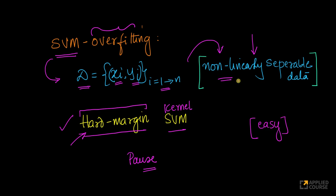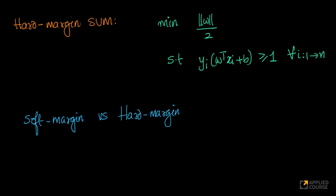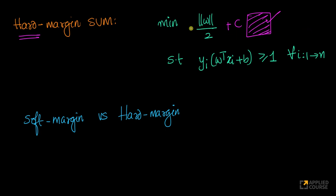The first hint is: because the data is non-linearly separable and you want to overfit, you will need to use a kernel SVM. It is also given that it is a hard margin SVM. If you look at the mathematical formulation of a hard margin SVM, you don't have any hinge loss term — unlike in a soft margin SVM. All you are trying to do is maximize the margin.